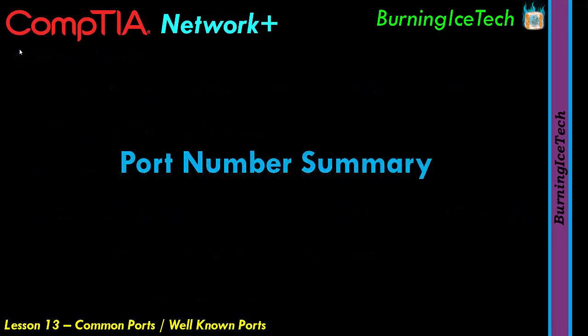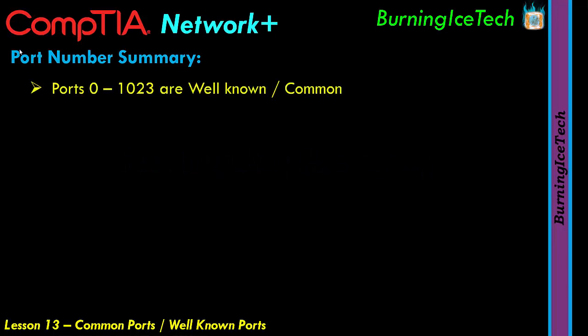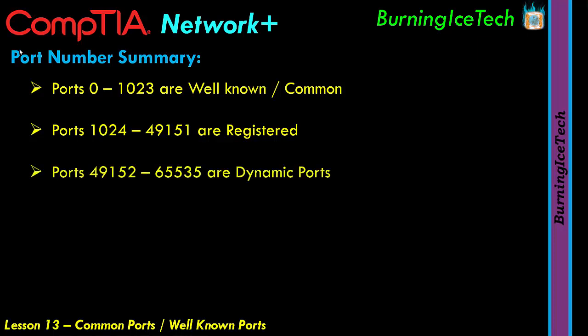To summarize: port numbers 0 through 1023 are well-known ports, also called common ports. Port numbers 1024 through 49,151 are called registered ports. And then all the remaining ports from 49,152 all the way to the last port number, 65,535, are called dynamic ports.